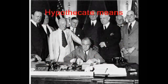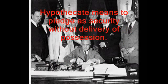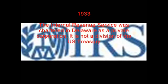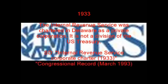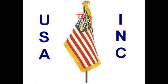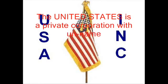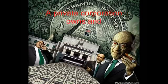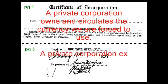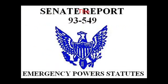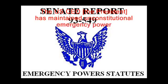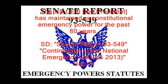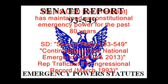1933: The Internal Revenue Service was chartered in Delaware as a private corporation. It is not a division of the U.S. Treasury. Source document: Internal Revenue Service Corporate Charter. The United States is a private corporation with unnamed stockholders. A private corporation is its fiscal agent. A private corporation owns and circulates the currency we are forced to use. A private corporation expects us to pay them taxes. The U.S. CEO — the President — has maintained unconstitutional emergency powers for the past 80 years. Source document: Senate Report 93-549 and Continuation of the National Emergency, 2012–2013.